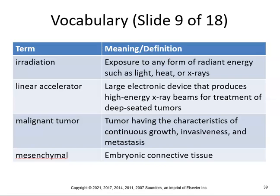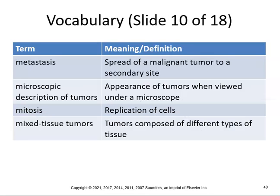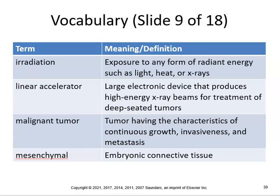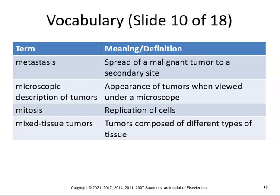A linear accelerator is a large electronic device that produces high-energy x-ray beams for treatment of deep-seated tumors. A malignant tumor is characterized by continuous growth, invasiveness, and metastasis — definitely know that definition. Mesenchymal refers to embryonic connective tissue. Metastasis is the spread of a malignant tumor to a secondary site — make sure you know that. Microscopic description of tumors refers to their appearance under a microscope. Mitosis is the replication of cells — cancer is mitosis in overdrive. Mixed tissue tumors are composed of different types of tissue.